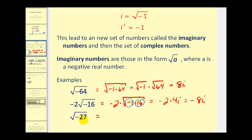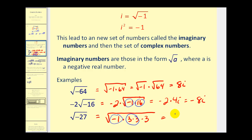The square root of negative 27 is equal to the square root of negative 1 times 27. Since 27 is not a perfect square, it would be 3 times 3 times 3. So the square root of negative 1 simplifies to i, and the square root of 9 simplifies to 3. This would give us 3i, and then we're left with the square root of 3.